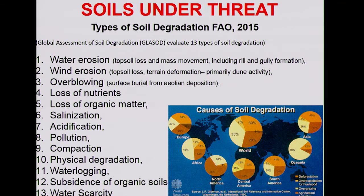Soils are under a severe threat. According to FAO 2015, the Status of the World Soil Situation identified 13 factors affecting soil degradation. The first two factors mainly affect erosion — losing soils due to water and wind — as well as losing nutrients, organic matter, and compaction and waterlogging. Causes of soil degradation vary by region. Worldwide, about 35% of soils are impacted by overgrazing, 28% by agriculture, and 30% by forestry.